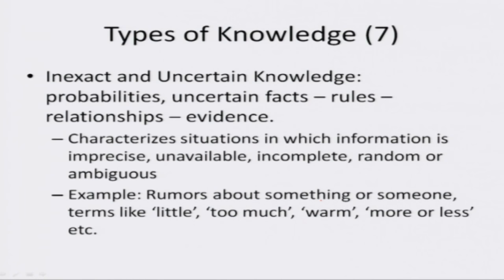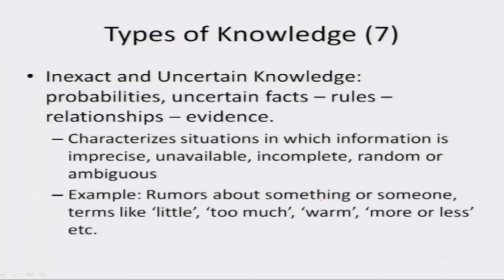Inexact and uncertain knowledge includes probabilities, uncertain facts, rules, relationships and evidence. It characterizes situations in which information is imprecise, unavailable, incomplete, random or ambiguous. For example, rumors about something or someone, or terms like 'little', 'too much', 'warm', 'more or less'. For instance: 'this glass of milk is a little hot' doesn't tell us the actual temperature; 'this room is more or less spacious' gives no information about dimensions; and 'the news is more or less correct' shows uncertainty about whether the news is correct. All these are examples of inexact and uncertain knowledge.